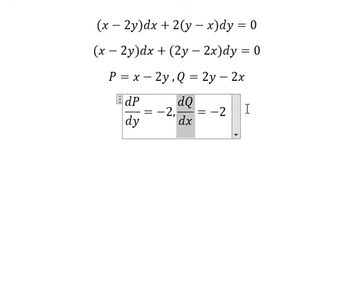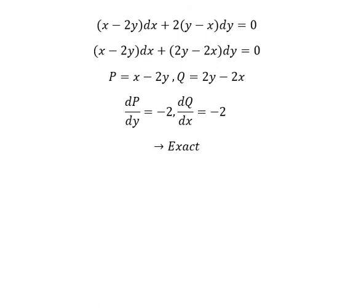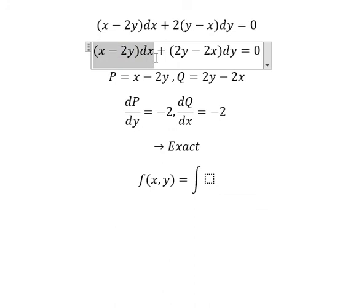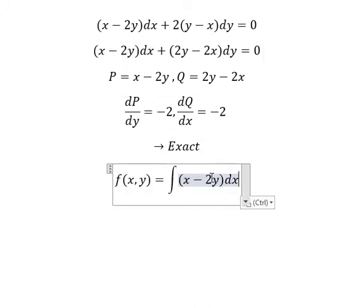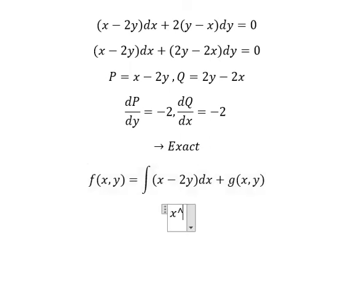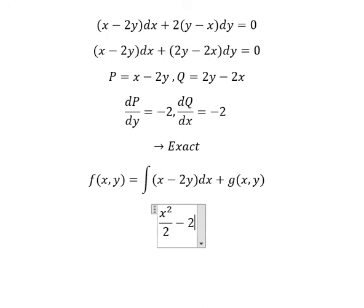Since these are equal, we can use the exact equation method. Now I need to set up the function f, and we take the integral. I will choose this term plus 3. The integral of x gives x squared over 2, and the integral of 2y gives 2xy.